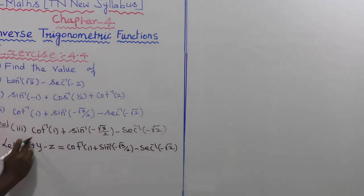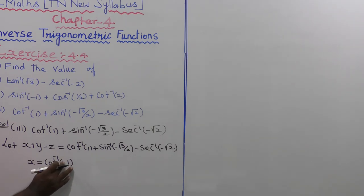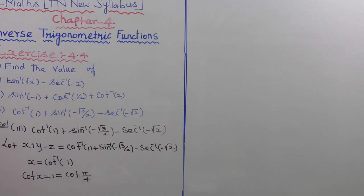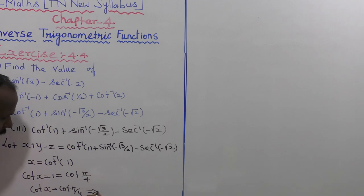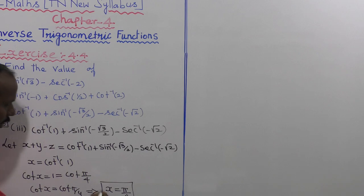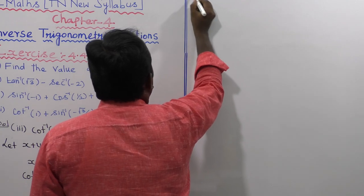First, let us take x equal to cot inverse of 1. Moving 1 to the right side, cot x is equal to 1, which equals cot of pi by 4. So cot cancels and x is equal to pi by 4.